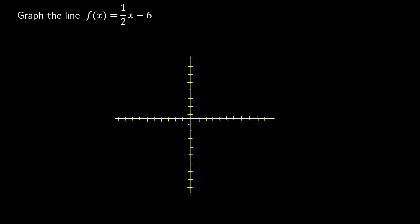Our first question is to graph the line f of x equals one half x minus 6. Don't be afraid — f of x in this case is the same thing as y. We know our slope is one half, meaning for every 2 in the x-direction we go up 1 in y. Our negative 6 tells us where it crosses the y-axis, so there's a point at 0, negative 6.